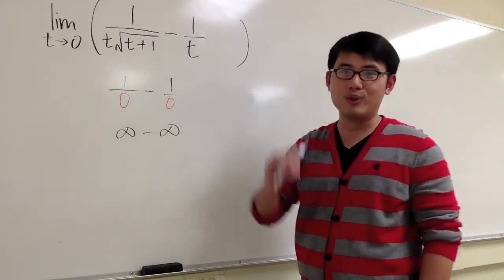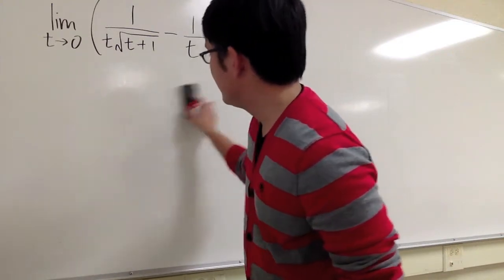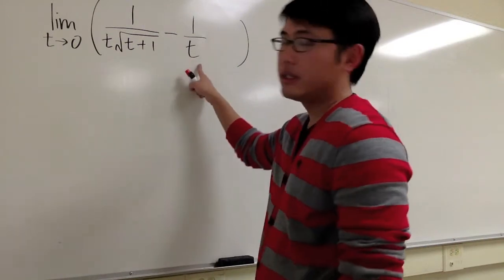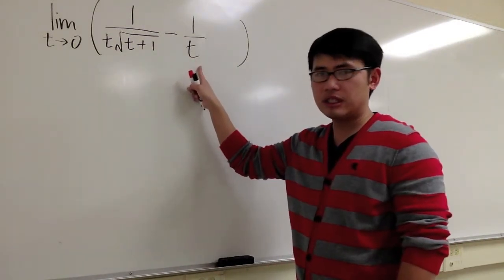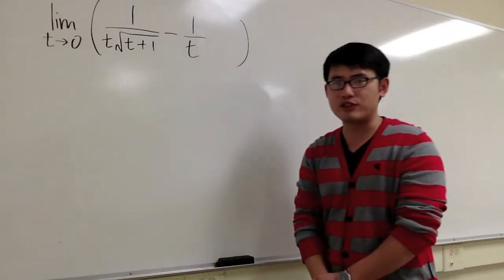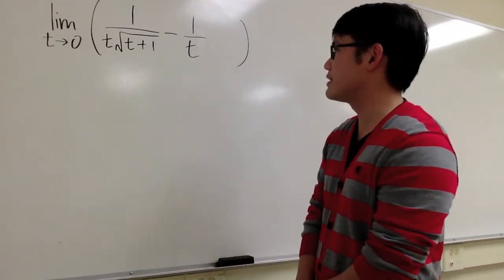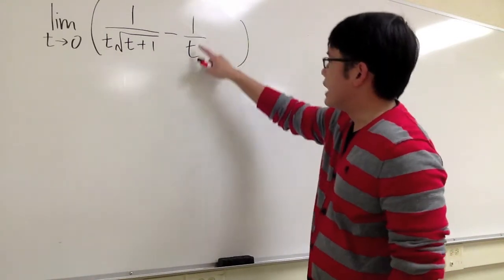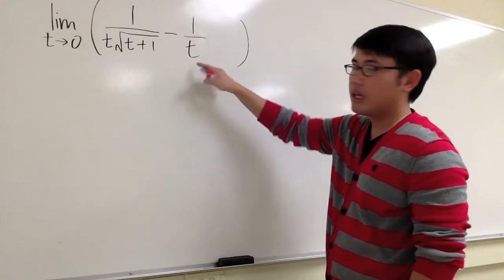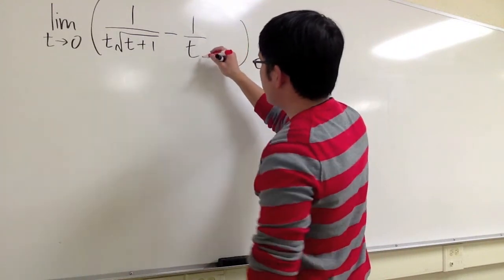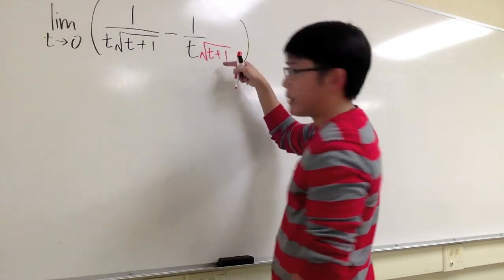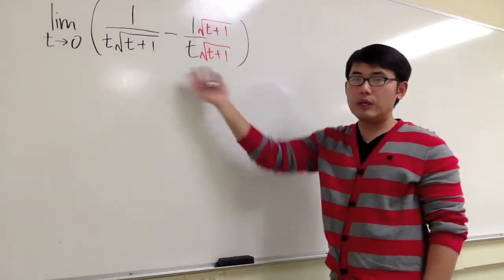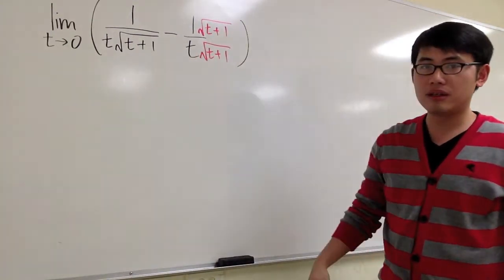This is an indeterminate form, so we have to do more work. We have two fractions that are subtracting. To subtract fractions, let's get a common denominator and put them into just one fraction to see what else we can do. The denominator for the first one is t times square root of t plus 1, and the denominator for the second fraction is just t. So for the second one, let me multiply by square root of t plus 1 on the bottom and also on the top, so they will have the same denominator.